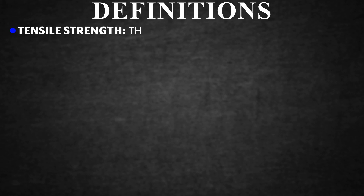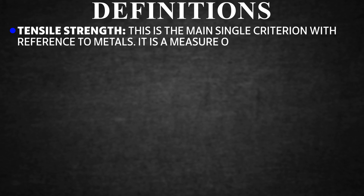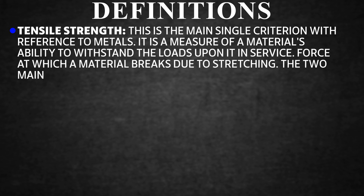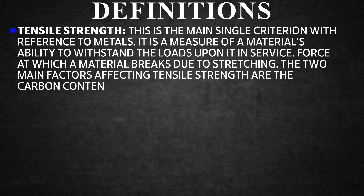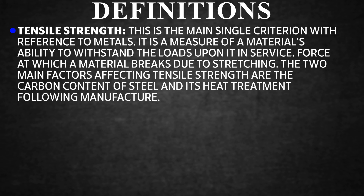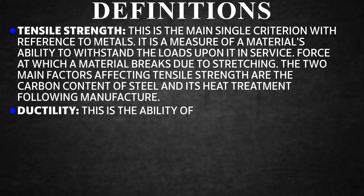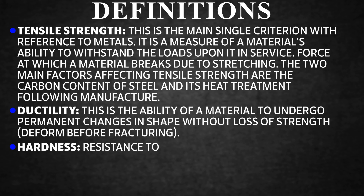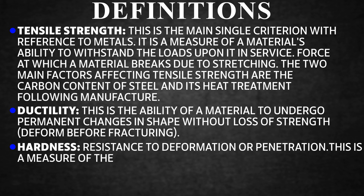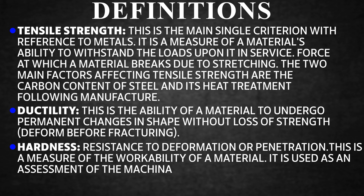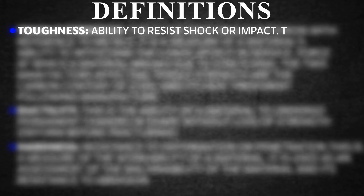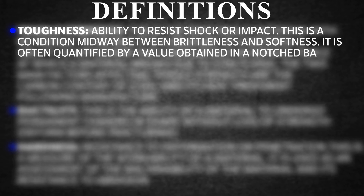Definitions. Tensile strength is the main single criterion with reference to metals — it is a measure of a material's ability to withstand loads in service; the force at which a material breaks due to stretching. The two main factors affecting tensile strength are carbon content and heat treatment. Ductility is the ability of a material to undergo permanent changes in shape without loss of strength. Hardness is resistance to deformation or penetration and is a measure of workability and machinability. Toughness is the ability to resist shock or impact — a condition midway between brittleness and softness, quantified by a notched bar test.